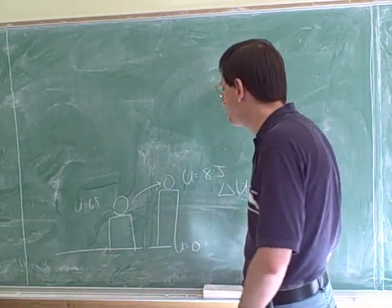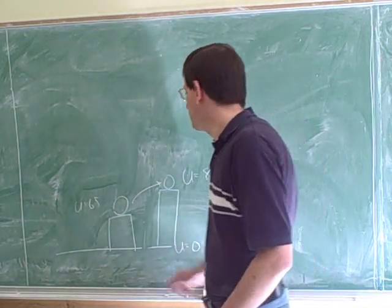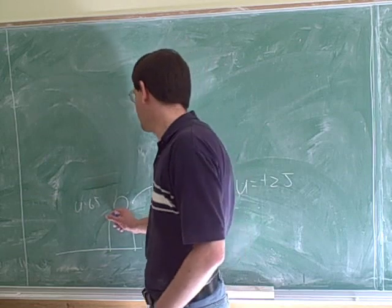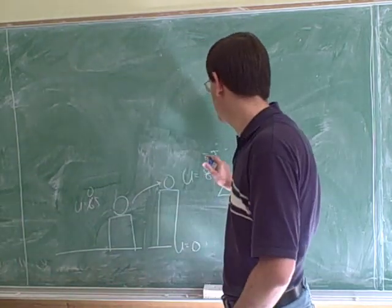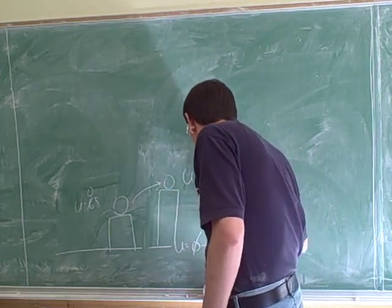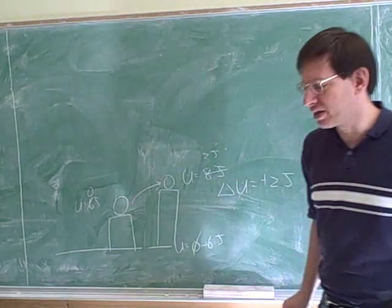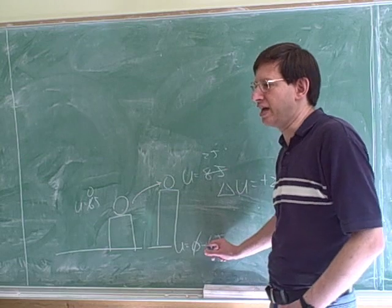One thing to keep in mind is that it's actually arbitrary what we choose to define as the ground. If we wanted to, we could have defined this as the ground. We could have said that this is U equals zero, and then the U over here would be two joules, and the U over here would be negative six joules. It's a little bit uncommon to have negative energies when you're dealing with gravity, but there wouldn't be anything paradoxical to that.